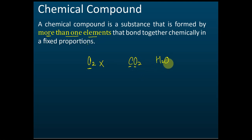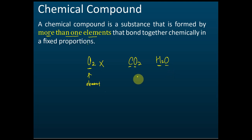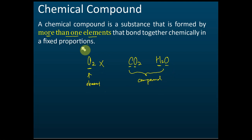Water is also a chemical compound, because there are two types of elements. So that's the difference between a compound and an element. If there is just one type of atom, then it is called an element. If there are two or more types, it is called a compound.